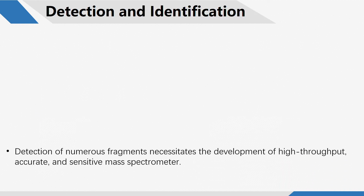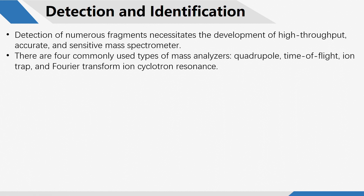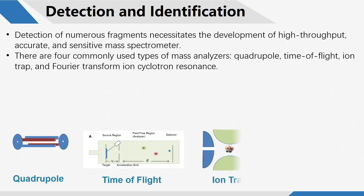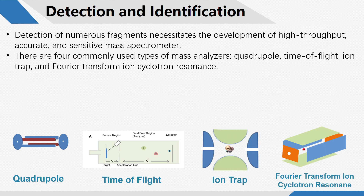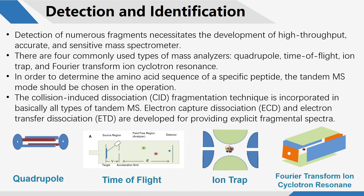Detection of numerous fragments necessitates the development of high-throughput, accurate, and sensitive mass spectrometers. There are four commonly used types of mass analyzers: quadrupole, time of flight, ion trap, and Fourier transform ion cyclotron resonance. These analyzers are usually put together in tandem to strengthen their superiorities. In order to determine the amino acid sequence of a specific peptide, the tandem mass spectrometer mode should be chosen. The collision-induced dissociation fragmentation technique is incorporated in basically all types of tandem mass spectrometers. Electron capture dissociation and electron transfer dissociation are developed for providing explicit fragmental spectra.